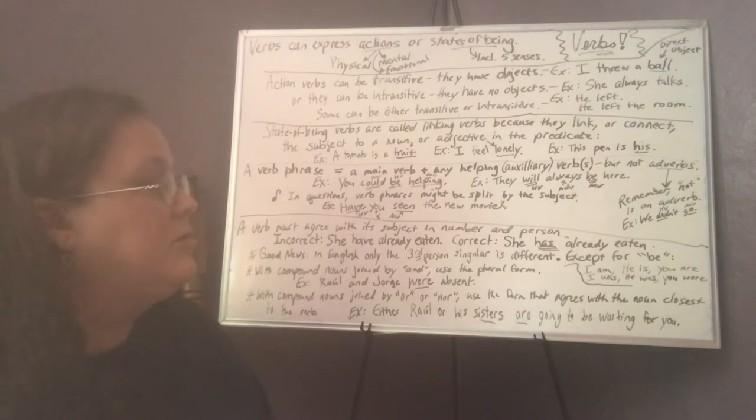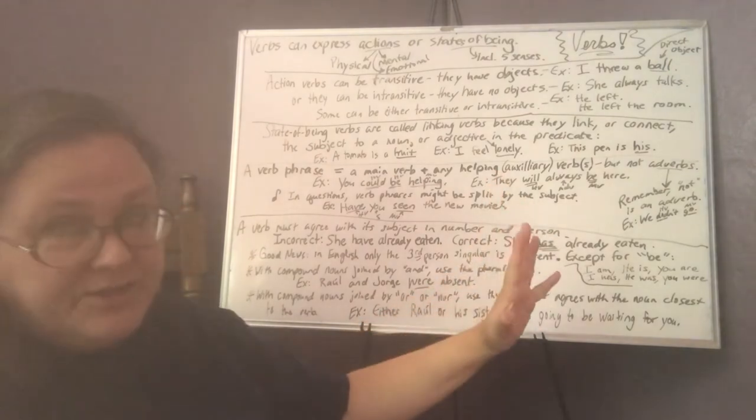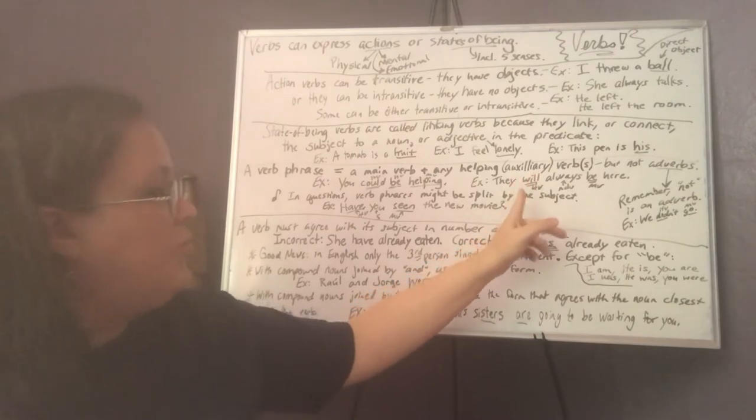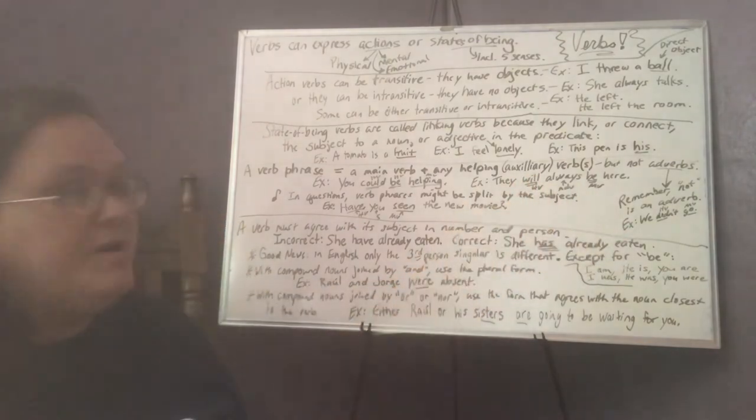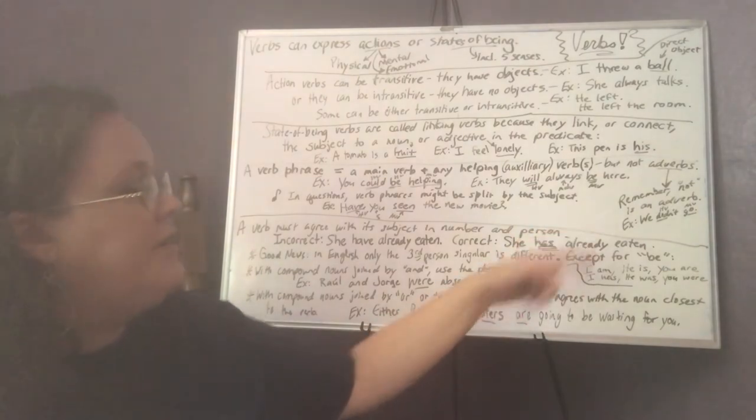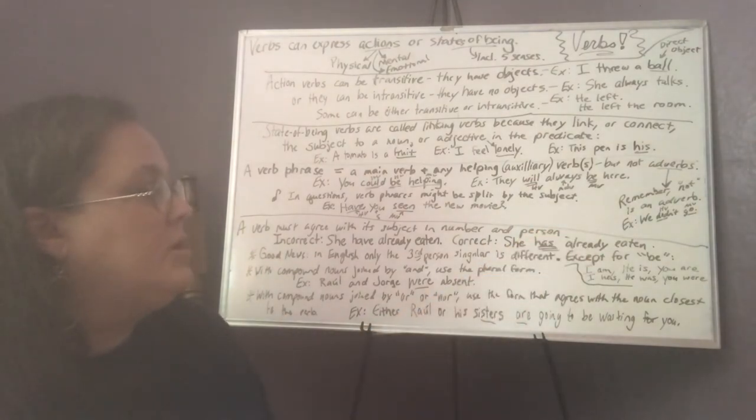So now you can see that sometimes verbs can be split by adverbs. Always is not a verb. So if I were to ask you to find the verb phrase, it would be will be. Even though the always is in the middle, it's not part of the verb phrase. And also remember not is an adverb. For example, we didn't go. The verb phrase is did go because not is an adverb.